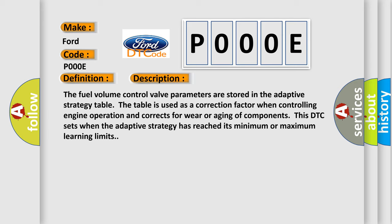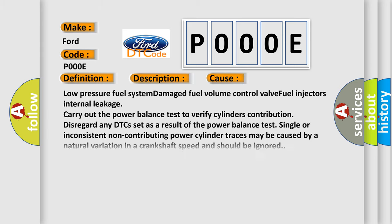This diagnostic error occurs most often in these cases: low pressure fuel system, damaged fuel volume control valve, fuel injectors internal leakage. Carry out the power balance test to verify cylinders contribution. Disregard any DTCs set as a result of the power balance test. Single or inconsistent non-contributing power cylinder traces may be caused by a natural variation in crankshaft speed and should be ignored.